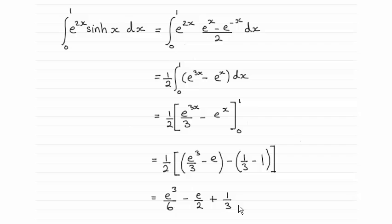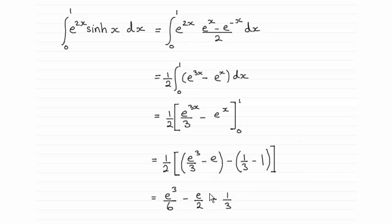To get this, I changed sinh of x into e to the power of x minus e to the minus x, over 2 — you should be familiar with that result. Then just expand and pull out the half as you can see here. Integrate e to the 3x and e to the x to get these results, then substitute the values in and it's fairly straightforward to get that answer.